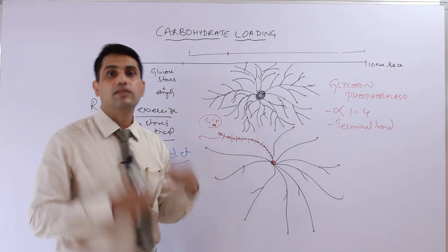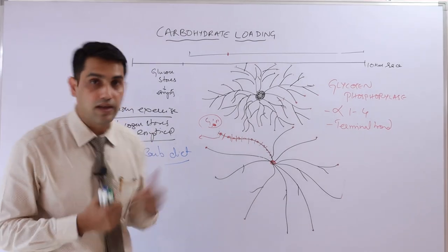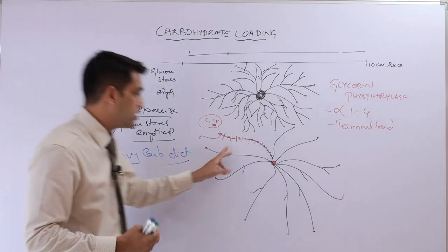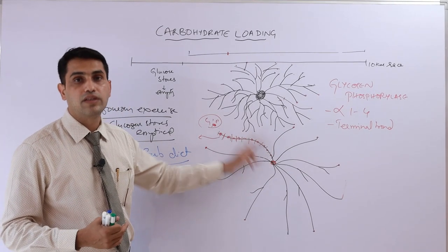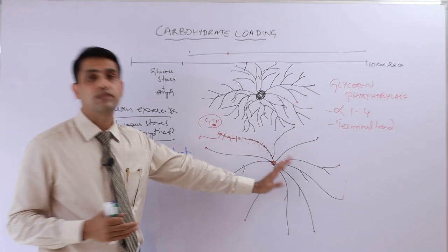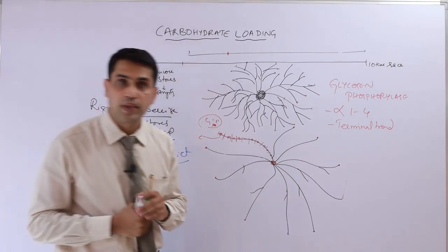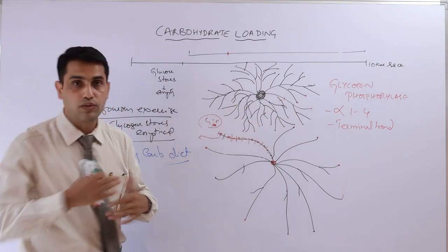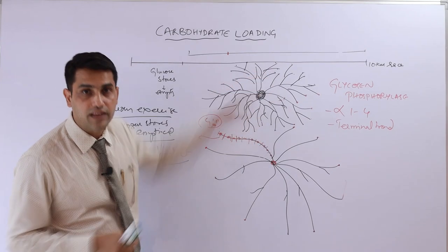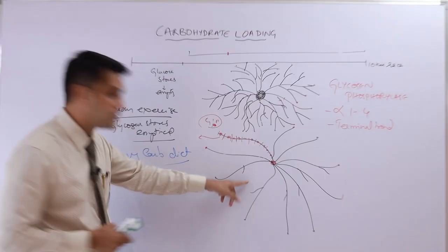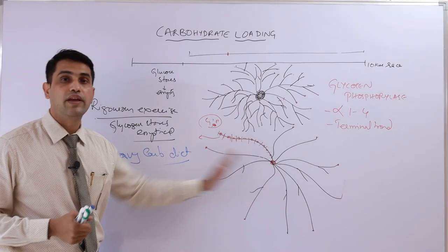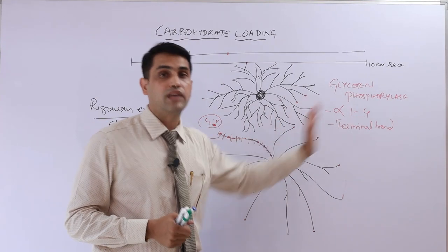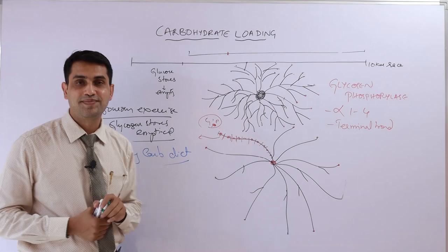When the marathon runner is running, he needs a continuous supply of glucose. Very slowly, glycogen phosphorylase breaks down this less-branched glycogen and provides energy continuously. The basic difference between us and a marathon runner is: our highly branched glycogen releases glucose immediately, whereas in marathon athletes it releases glucose very slowly, so they can exercise over a very long period of time.